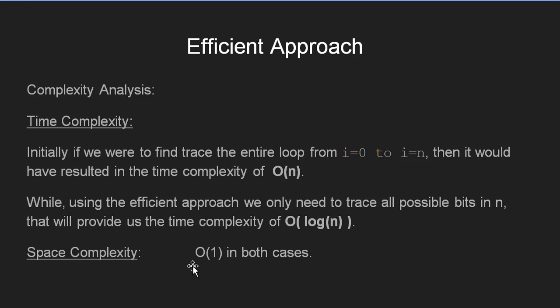Here we have complexity analysis. In time complexity, earlier what we were doing is we were iterating from i equal to 0 to n, which would have resulted in time complexity of big O of n. But now we are efficiently going from each binary bit in n, and since those are order of log n, hence we get the time complexity of order of log n in the efficient approach. While talking about space complexity, in both the cases we do not require any extra space for storing the extra variables. Hence we get the space complexity of big O of 1 in both the cases.